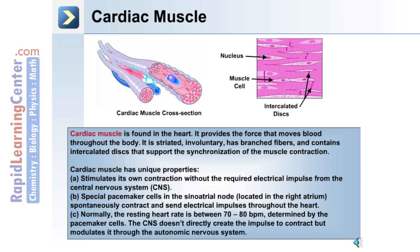Third, the normally resting heart rate is between 70 and 80 beats per minute, and this is determined by pacemaker cells. The central nervous system doesn't directly create the impulse to contract the heart; however, it modulates it through the autonomic nervous system.